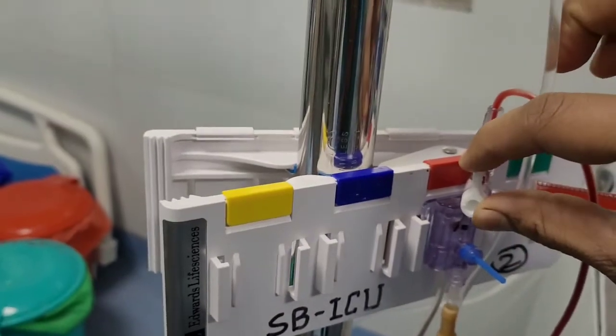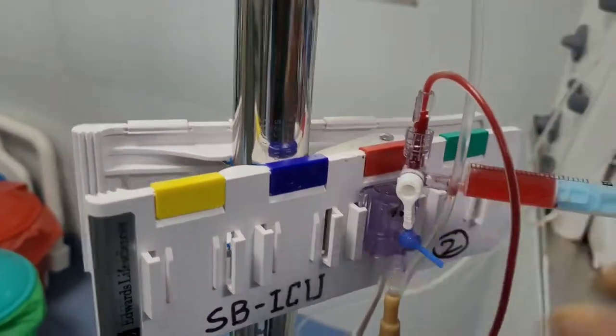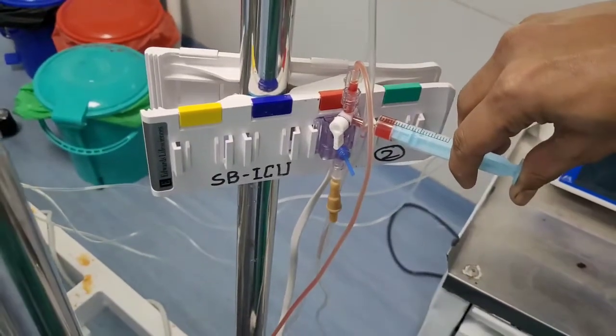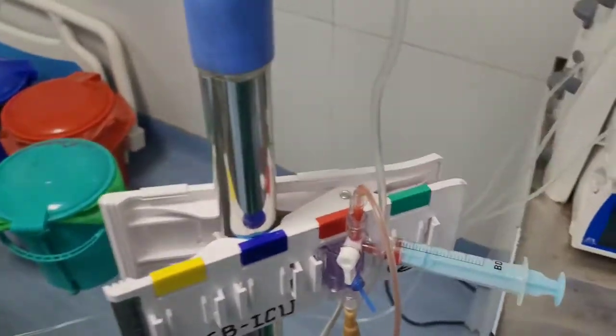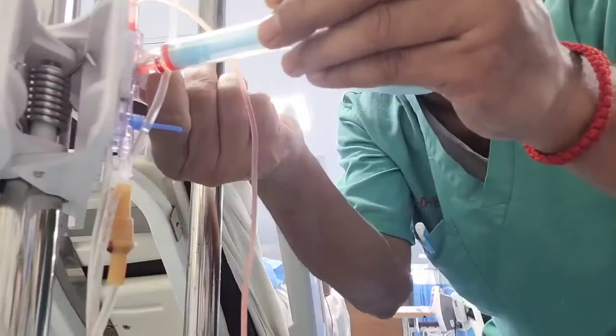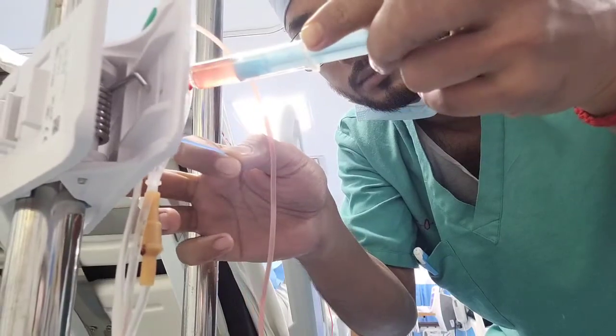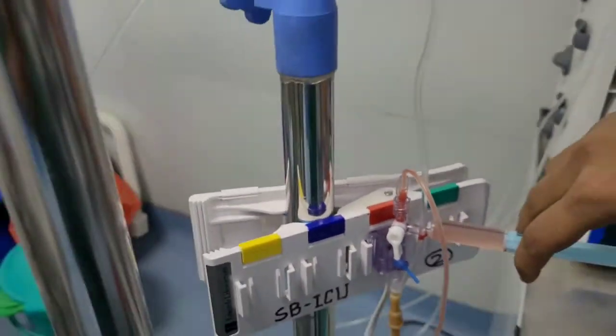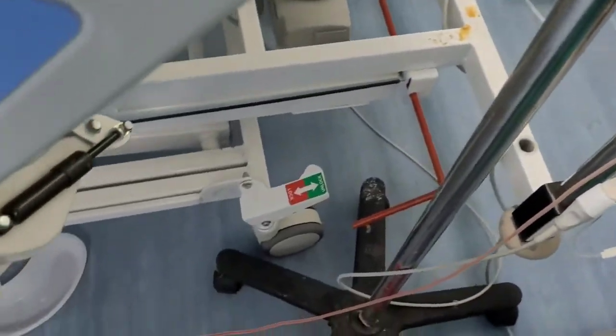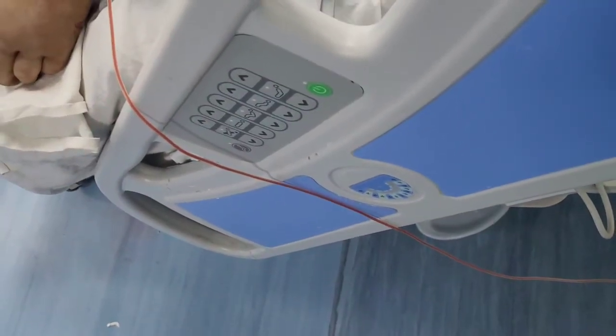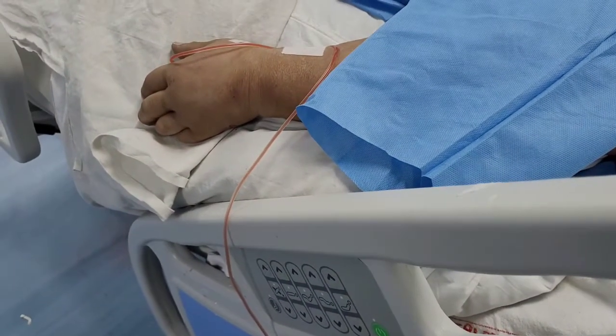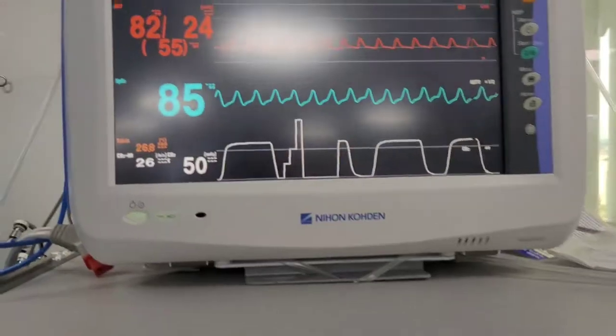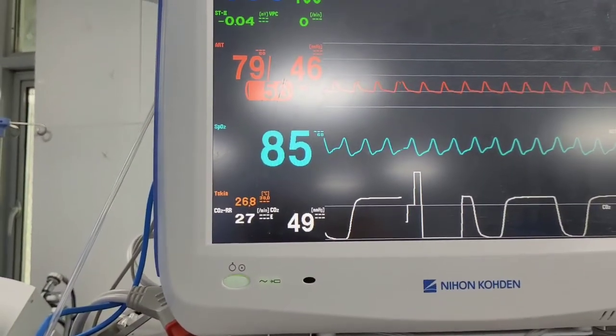Now we will turn this off this way and push flush. See how the flush is going and the blood is clearing. Now again we will turn this way, and the BP is taking the reading of invasive blood pressure.